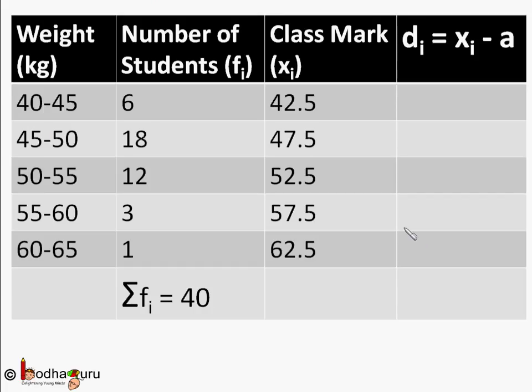Let us find the class mark which is the midpoint for each class. Like 42.5 is the midpoint of 40 to 45 class, which is 40 plus 45 by 2 equal to 42.5 and so on.